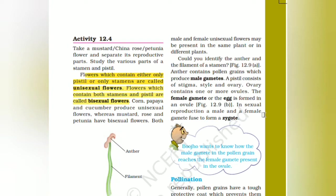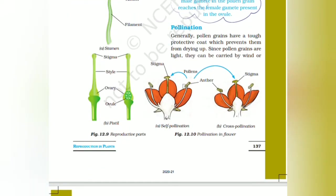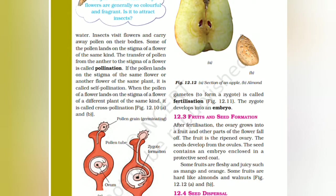In sexual reproduction, the male and female gametes fuse together to form a zygote. Pollination: pollen grains have a tough protective coat which prevents them from drying up. Since pollen grains are light, they can be carried by wind or water. Insects visit flowers and carry pollen on their bodies. Some of the pollen lands on the stigma of a flower of the same kind. The transfer of pollen from the anther to the stigma is known as pollination.